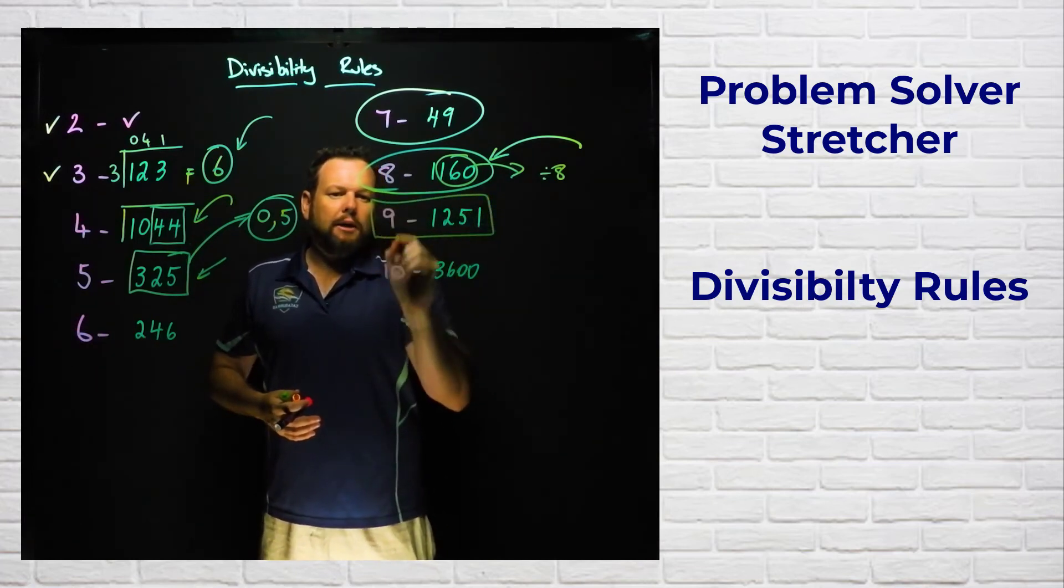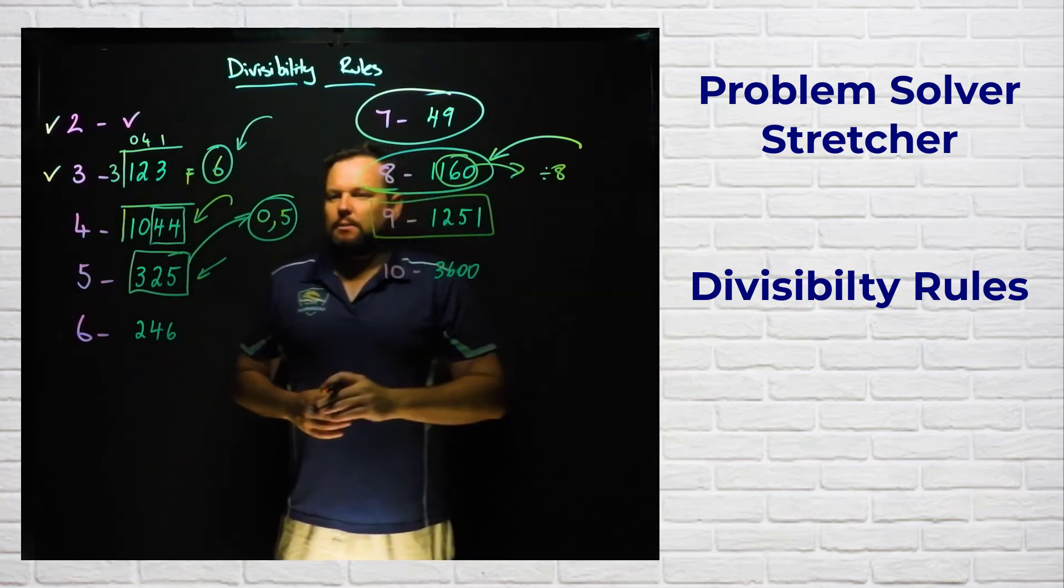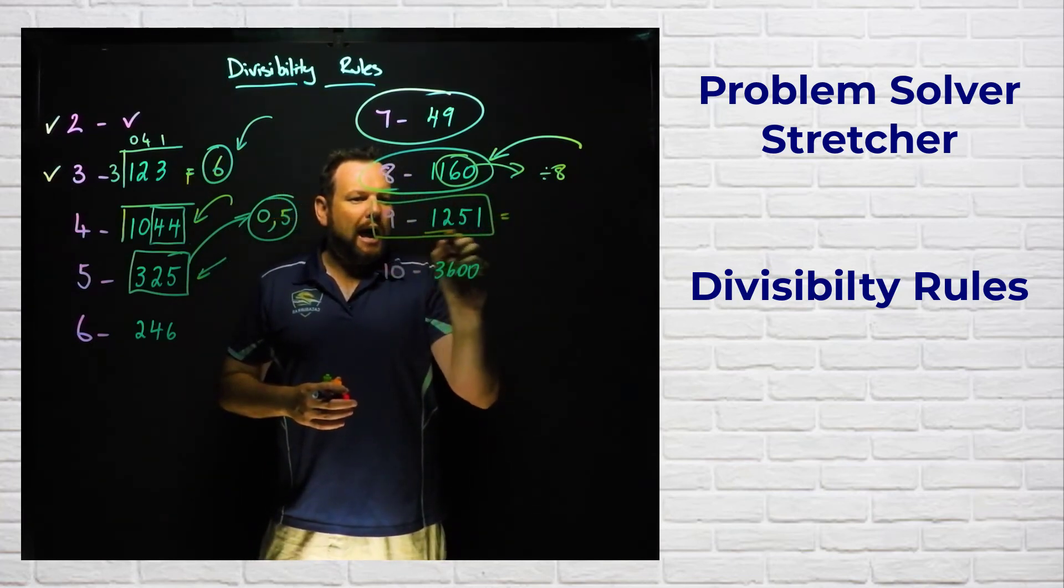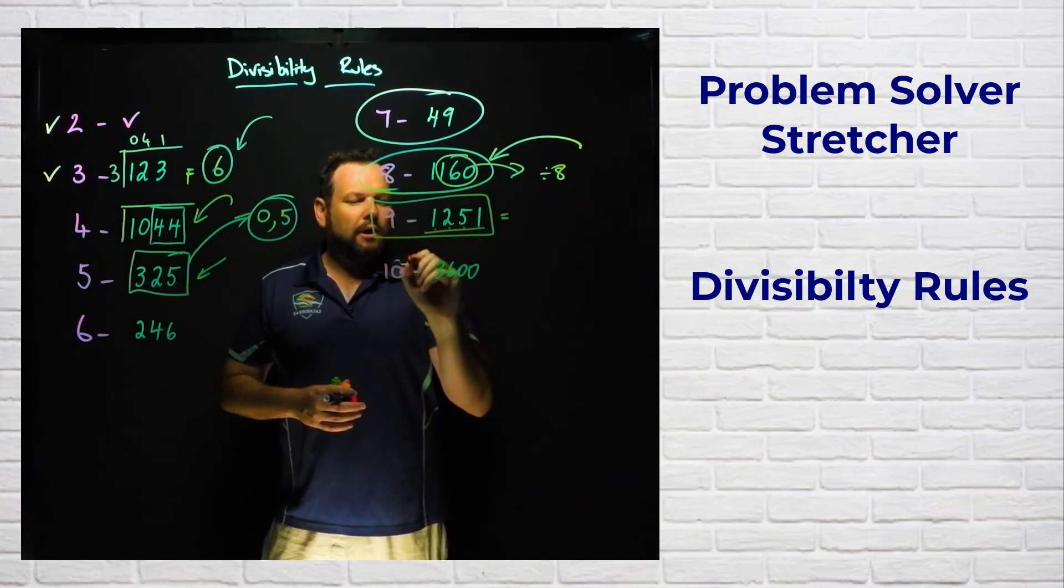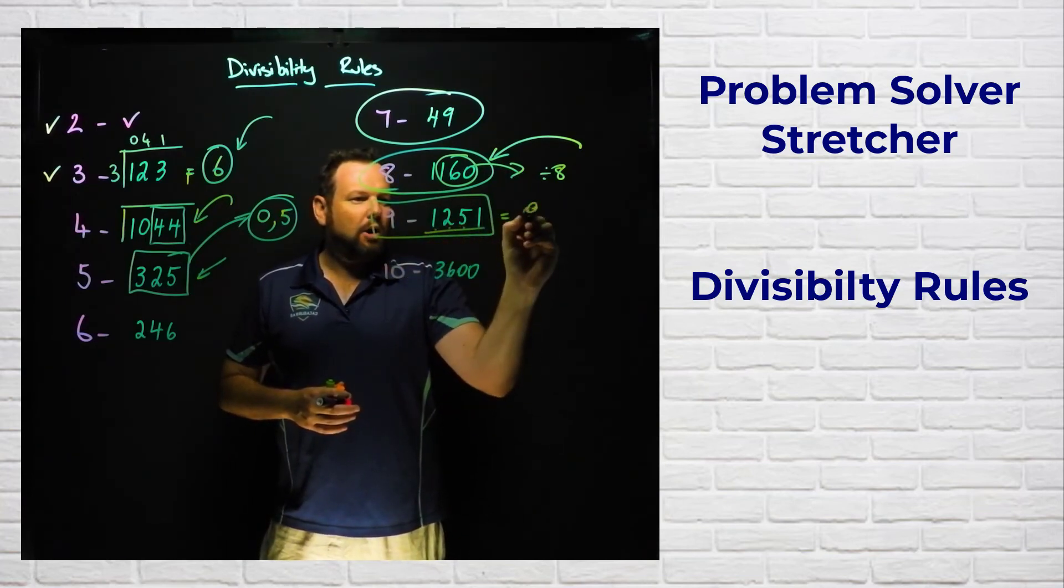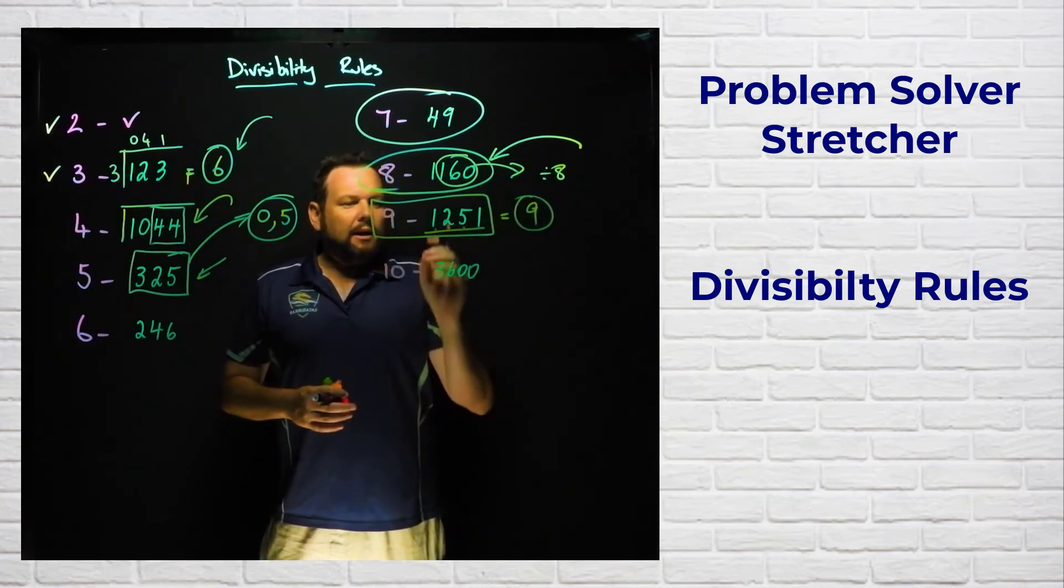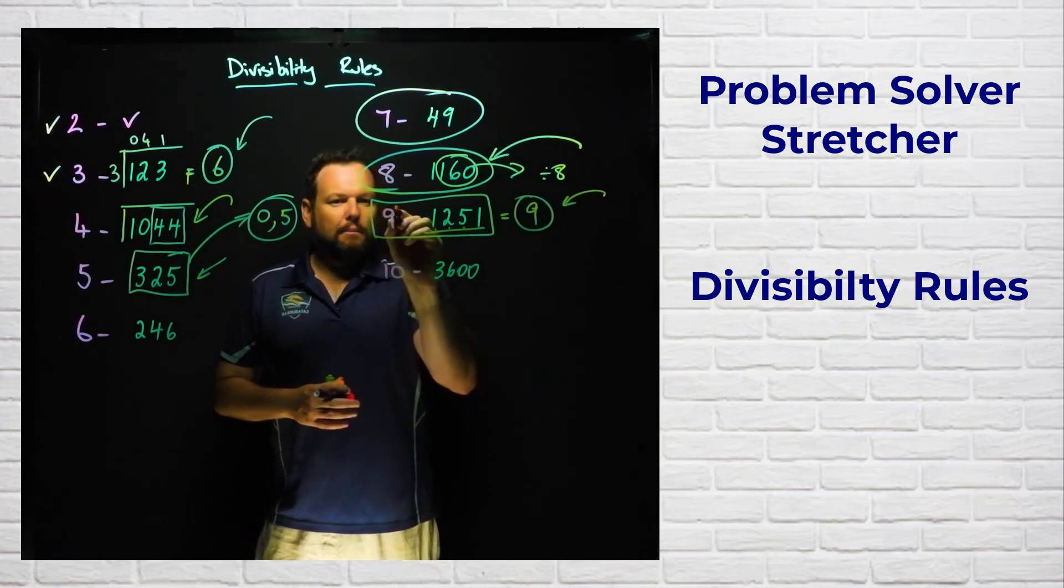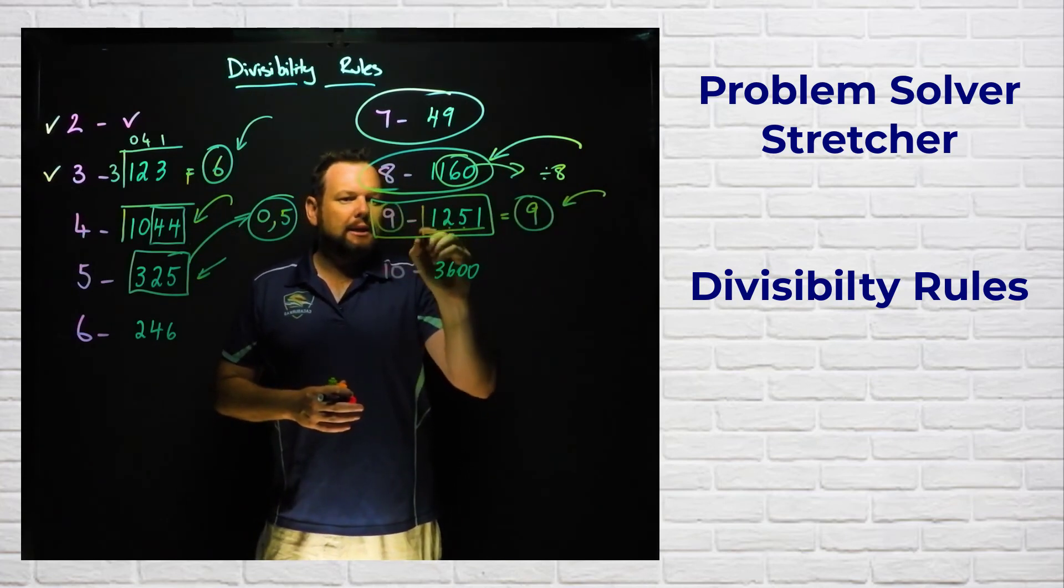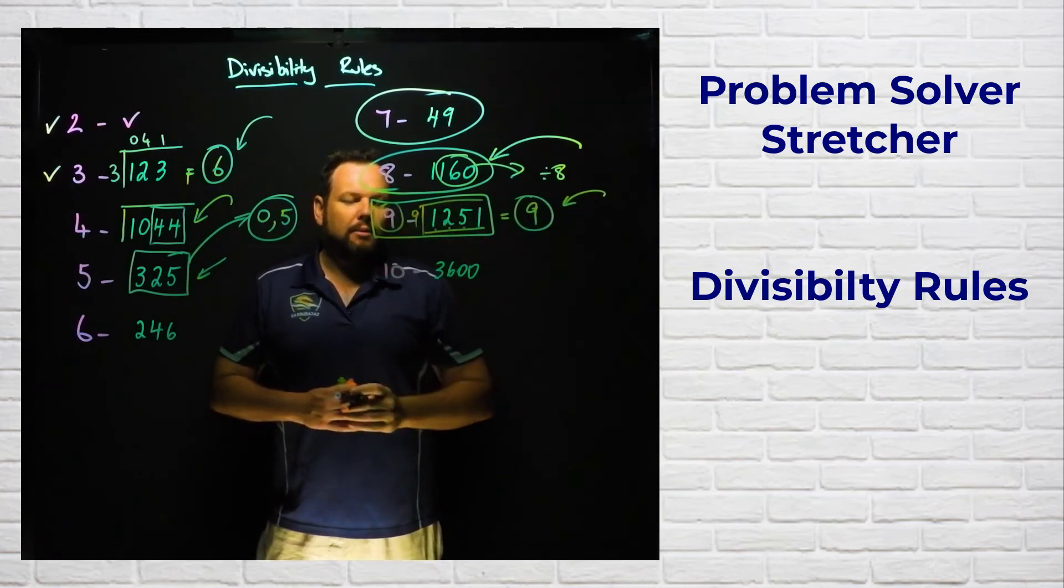Nine is a really handy one. It's one of my go-to divisibility rules and the rule for this is you add the digits. 1 plus 2 is 3, 3 plus 5 is 8, plus 1 gives me 9. If you can sum the digits and then divide this number by nine, it means that this number here can be divided by nine.